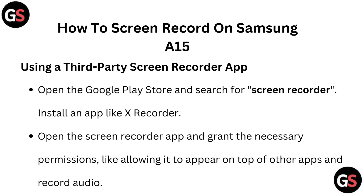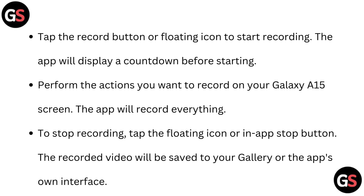Open the Screen Recorder app and grant the necessary permissions, like allowing it to appear on top of other apps and record audio. Tap the record button or floating icon to start recording.